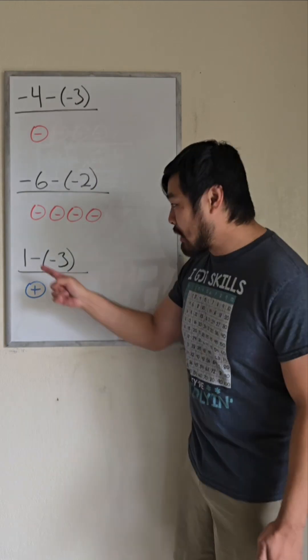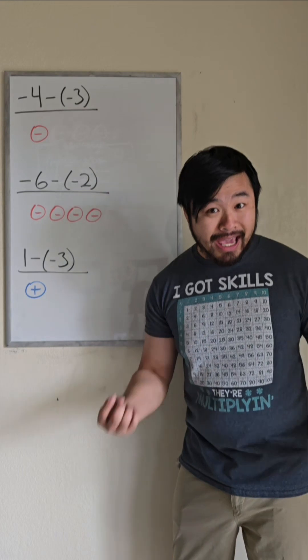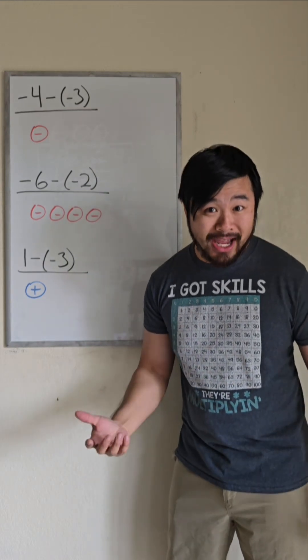Now what about something like 1 take away negative 3? I don't have negative 3 to take away. So what I can do is add three zero pairs.